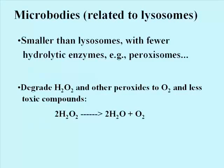The other organelles that arise from RER and Golgi vesicles, and that contain packaged proteins, are collectively called microbodies. These are smaller than lysosomes usually, and contain fewer different hydrolytic enzymes. One example is peroxisomes, which are particularly rich in enzymes called peroxidases, that destroy highly toxic and destructive peroxides, like hydrogen peroxide, that are generated as a byproduct of some biochemical reactions.